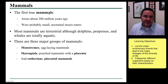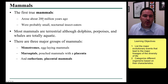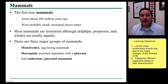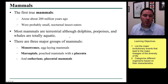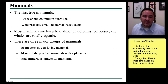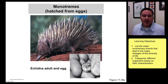Eventually you get the evolution of the mammals. They arose about 200 million years ago. Most mammals are terrestrial, although secondarily dolphins and whales have become fully aquatic. There are three major groups of mammals: the monotremes, marsupials, and the true placental mammals.